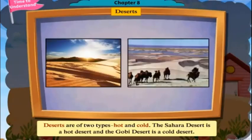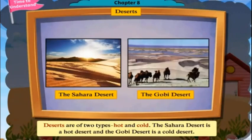Deserts are of two types: hot and cold. The Sahara Desert is a hot desert and the Gobi Desert is a cold desert.